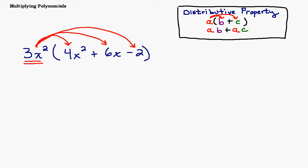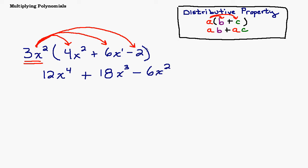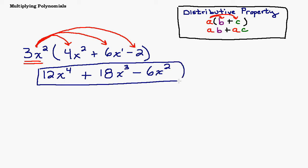We get 12x to the fourth, because we add the exponents. Then 3 times 6 is 18, and x squared times x is x to the third, giving 18x cubed. Then minus 3 times 2 is 6, and there's no x term to multiply, so just 6x squared. Our answer is a trinomial: 12x to the fourth plus 18x cubed minus 6x squared. None of these terms are like terms so we can't simplify further.